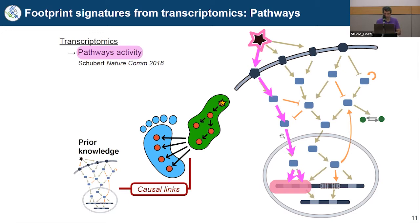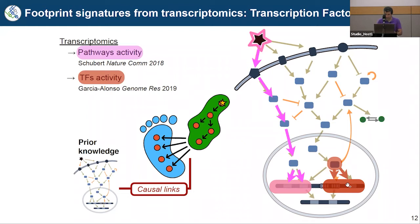To be more concrete: with transcriptomics — changes in RNA molecule expression — I can estimate the activity of signaling pathways. Most methods look at changes in expression of the blue components — the signaling cascade proteins — but more RNA doesn't mean more protein, and more protein doesn't mean it's active, because activity may depend on localization or phosphorylation. For this reason we and others instead look at the footprint: which genes we know change when a pathway is active, giving us a much more accurate estimation of its activity.